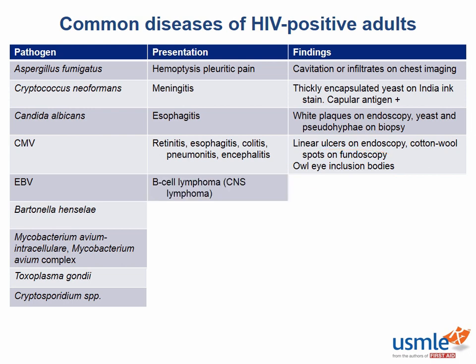Epstein-Barr virus can cause a B-cell lymphoma, which can manifest as non-Hodgkin lymphoma or a CNS lymphoma. If you hear the words CNS lymphoma in a patient with AIDS, the lymphoma is likely caused by EBV infection nine times out of ten. It is a solitary, ring-enhancing lesion seen on MRI or CT scan.